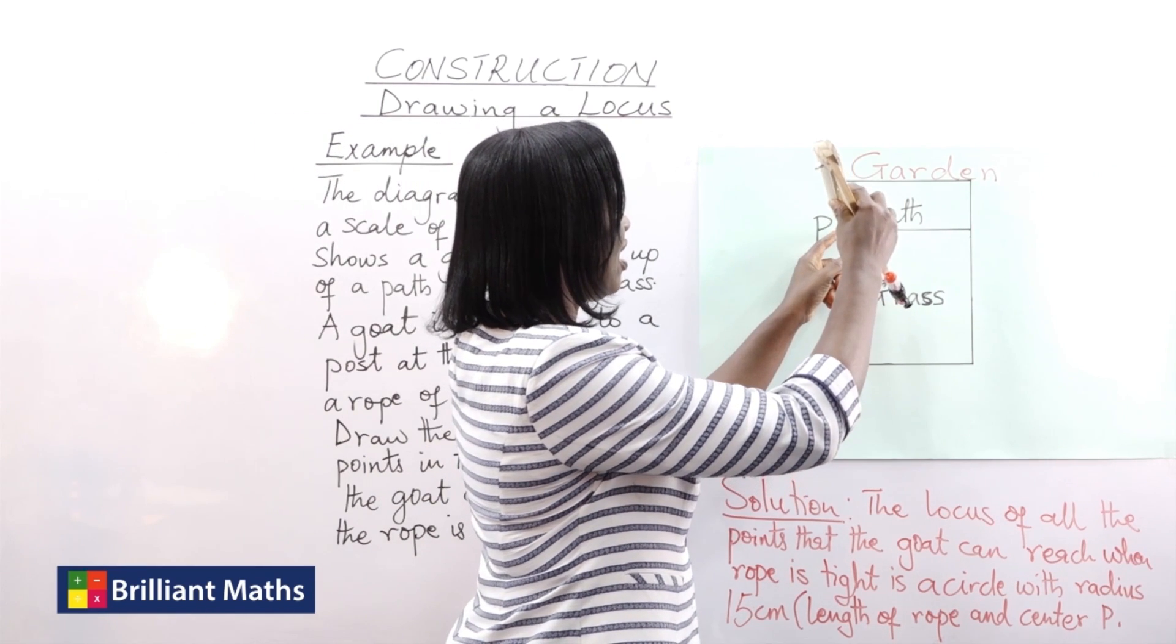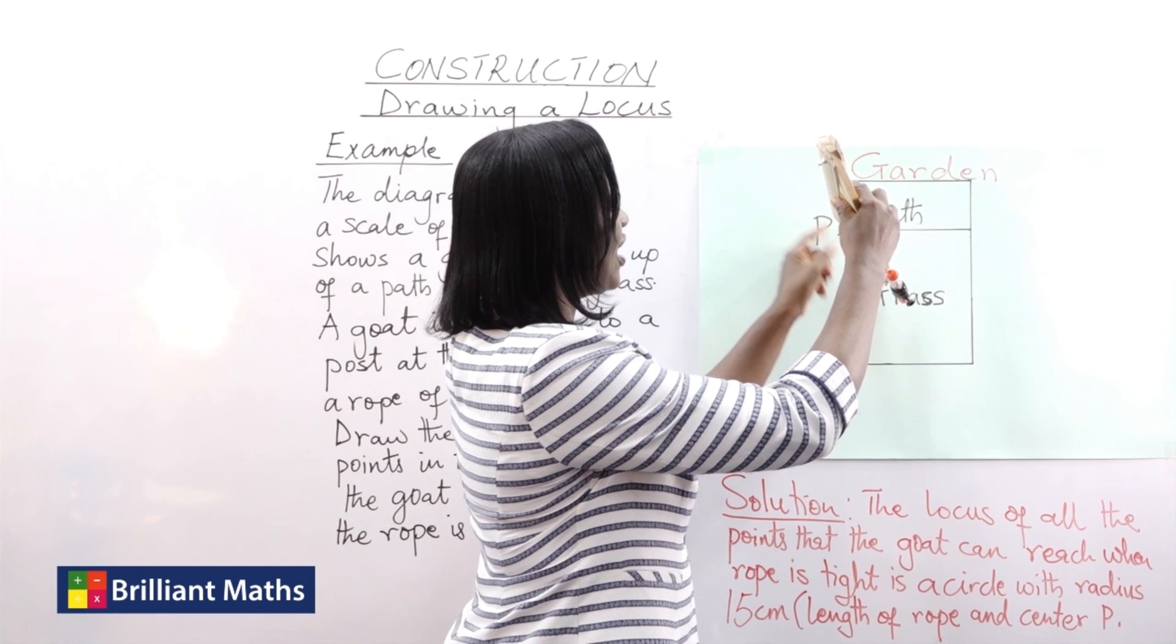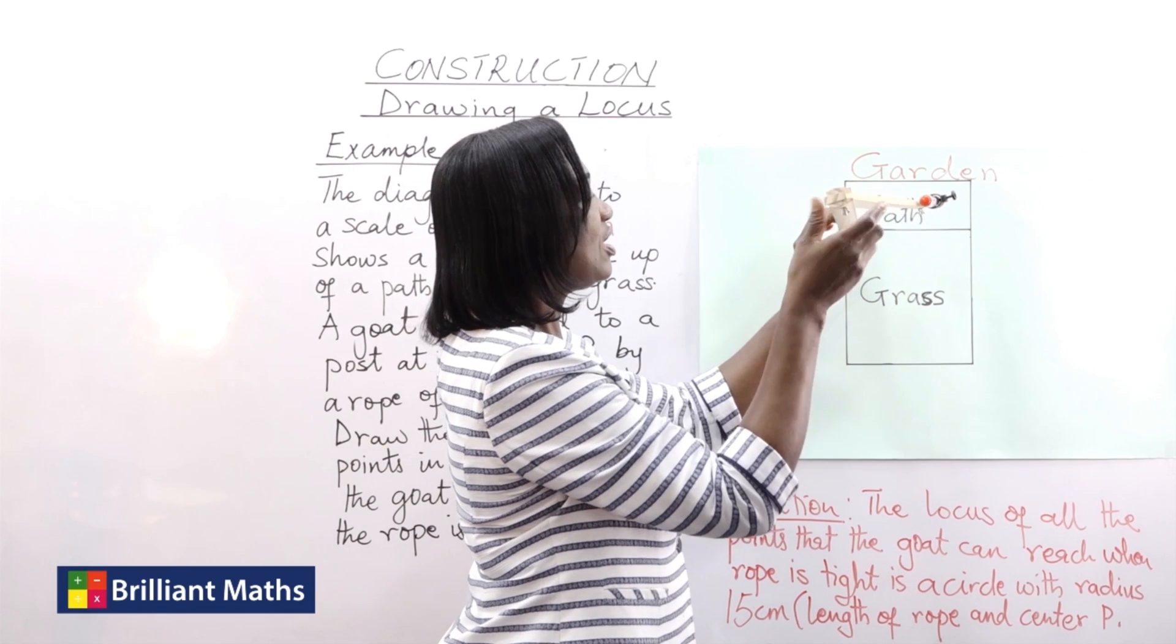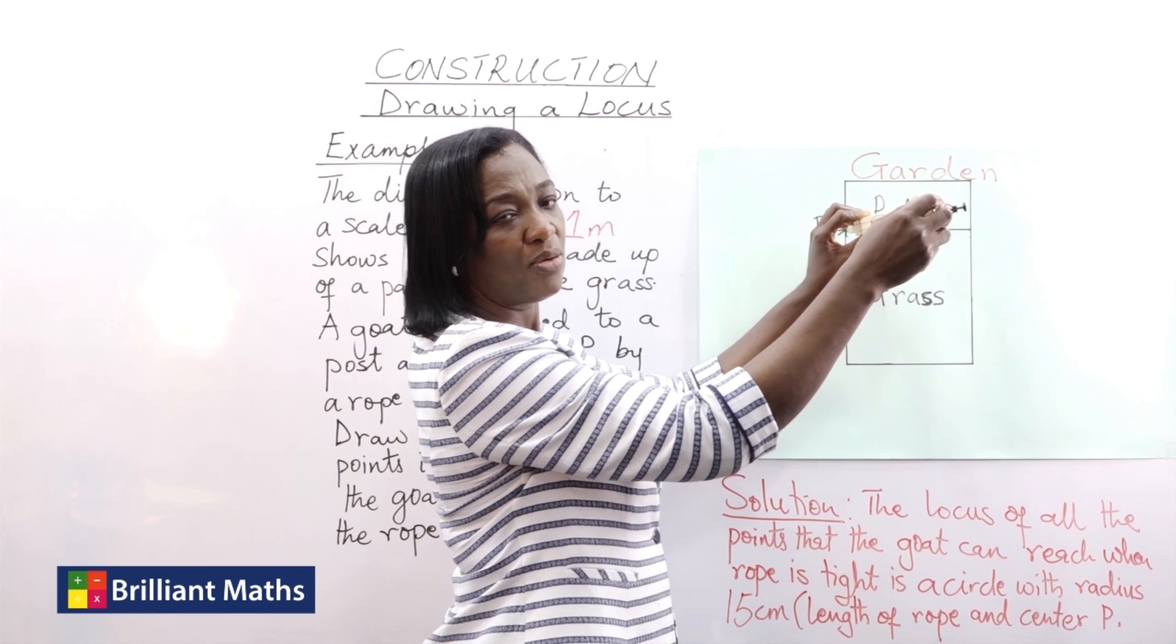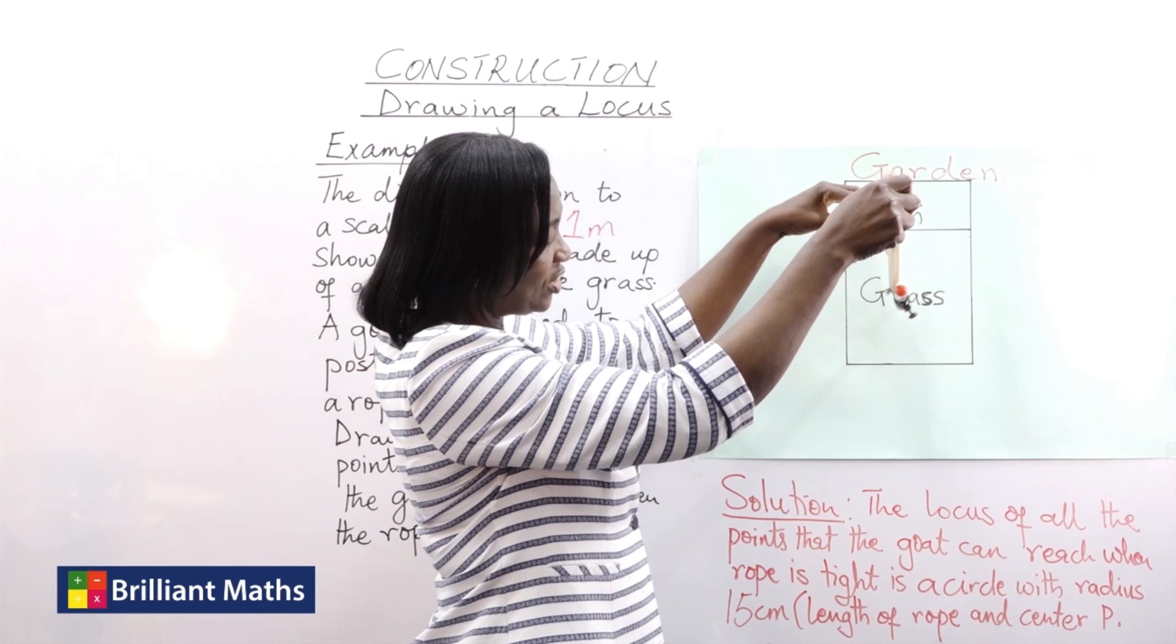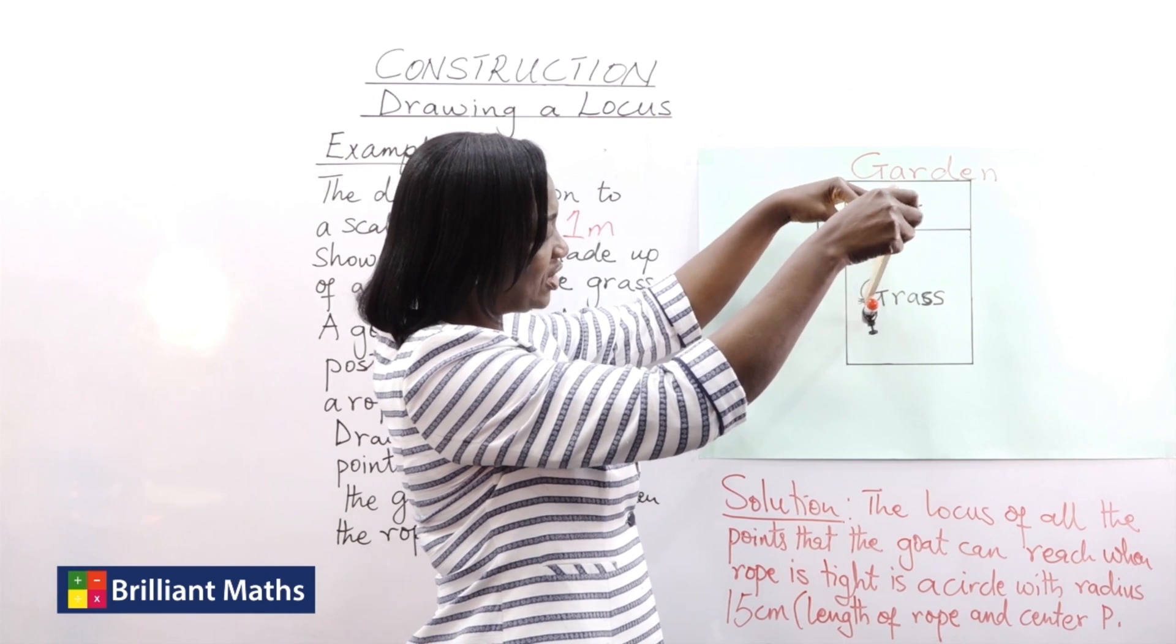So if the goat is tied here, the goat is standing there. It can only go around as long as the rope will allow. So as you can see that will give us the path.